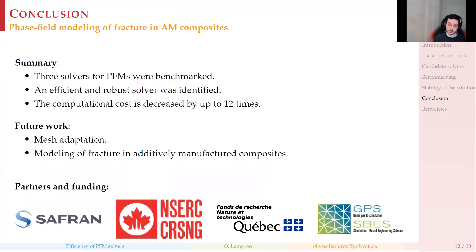In the end, our modified Newton algorithm that we found in the optimization literature ended up to be way more robust and up to 12 times faster in those benchmarks. So now that we have reduced this computational cost, the next step will be to maybe reduce it even more by using mesh adaptation. And of course, the objective is to model fracture in 3D printed composites. Thank you.